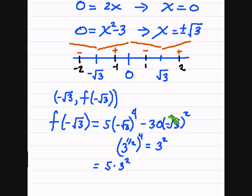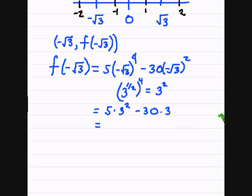And then you have this negative 30. And so that just becomes 3. And so we have 5 times 9 minus 90. And 5 times 9 is 45 minus 90. This is negative 45.